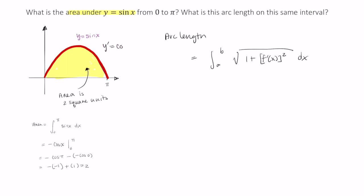So our function here has a first derivative of cosine x. So we can rewrite this arc length formula here using this cosine of x.